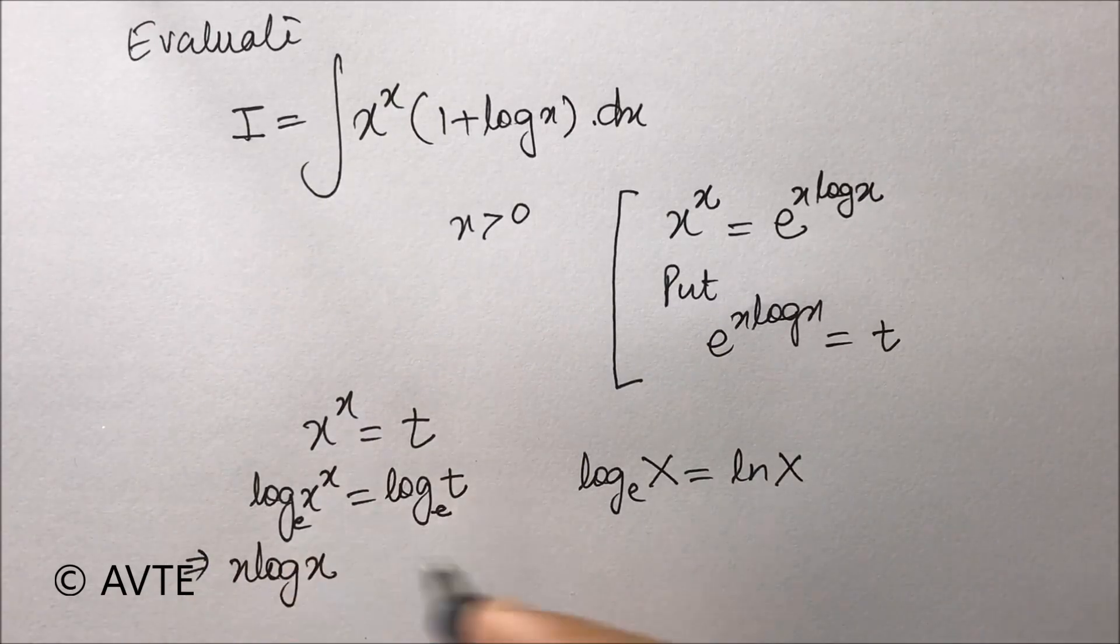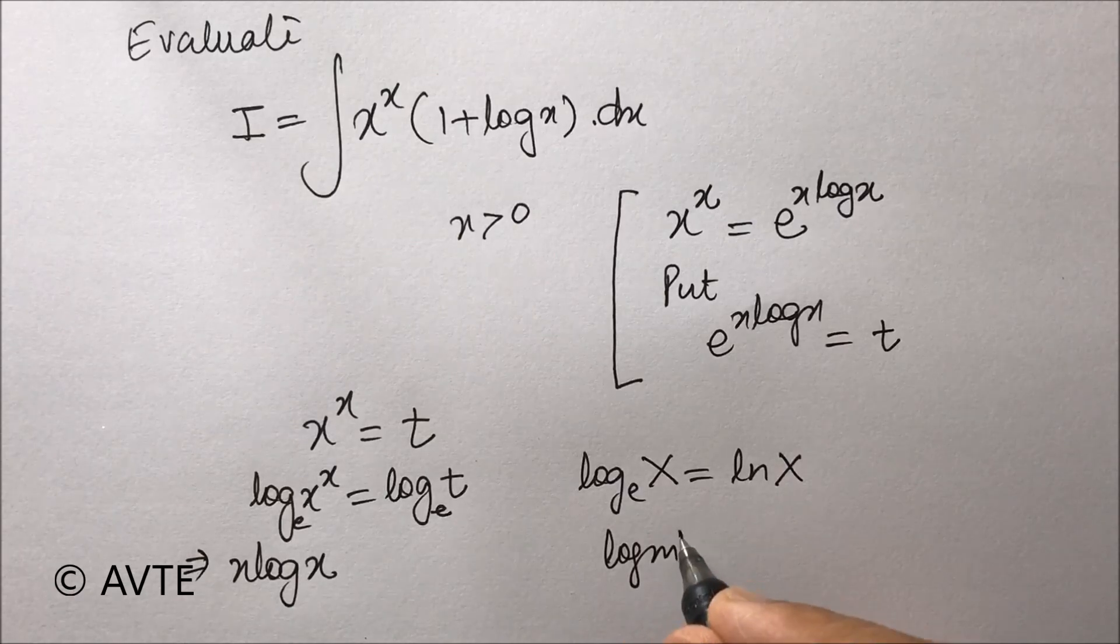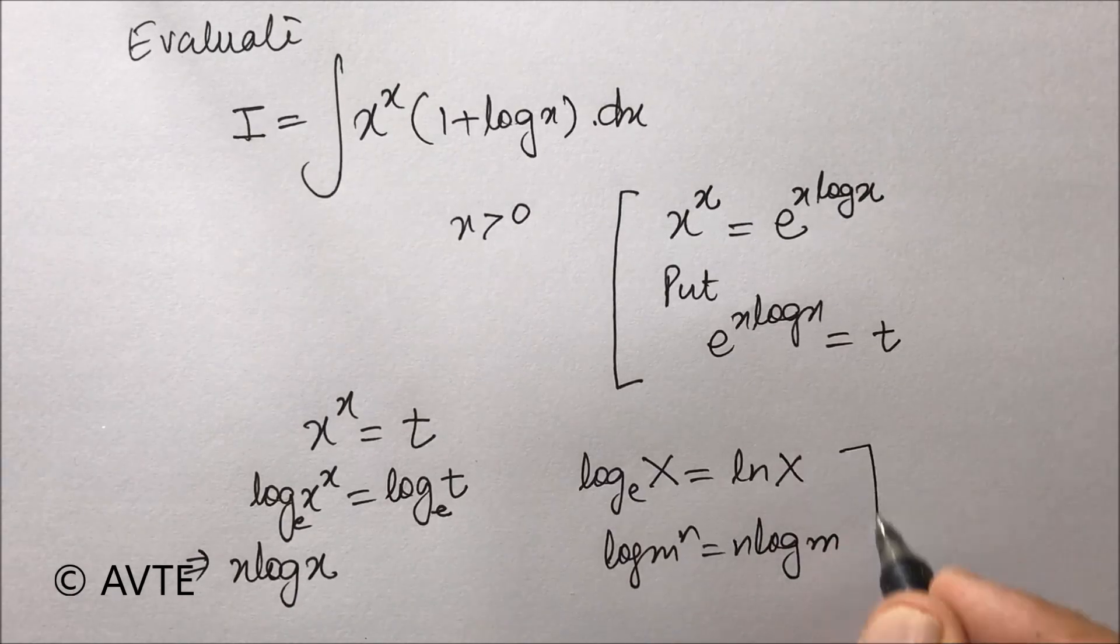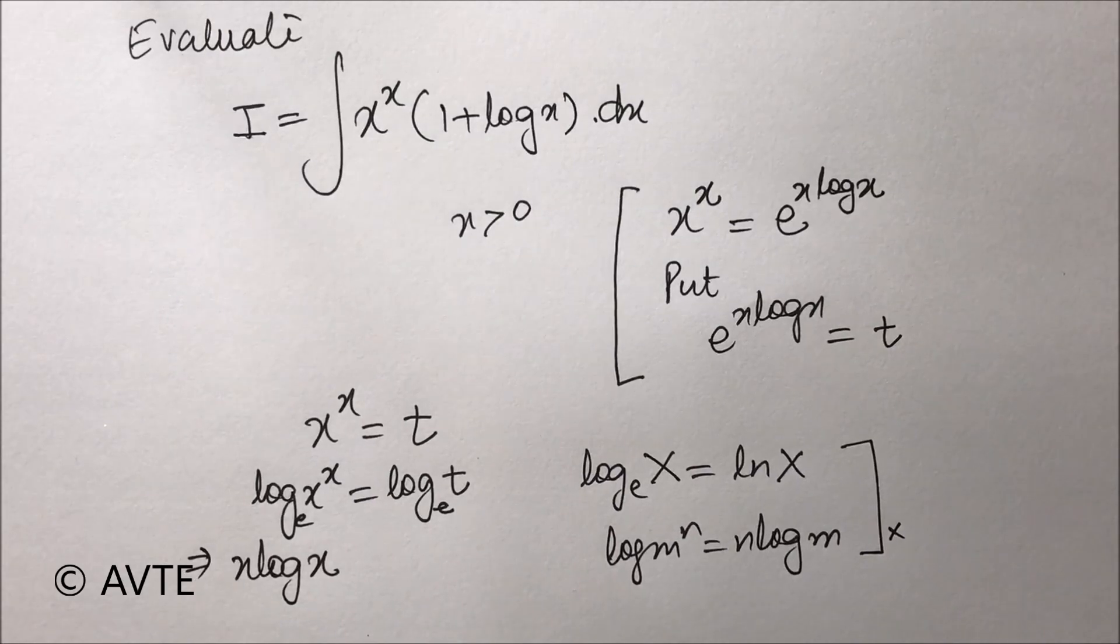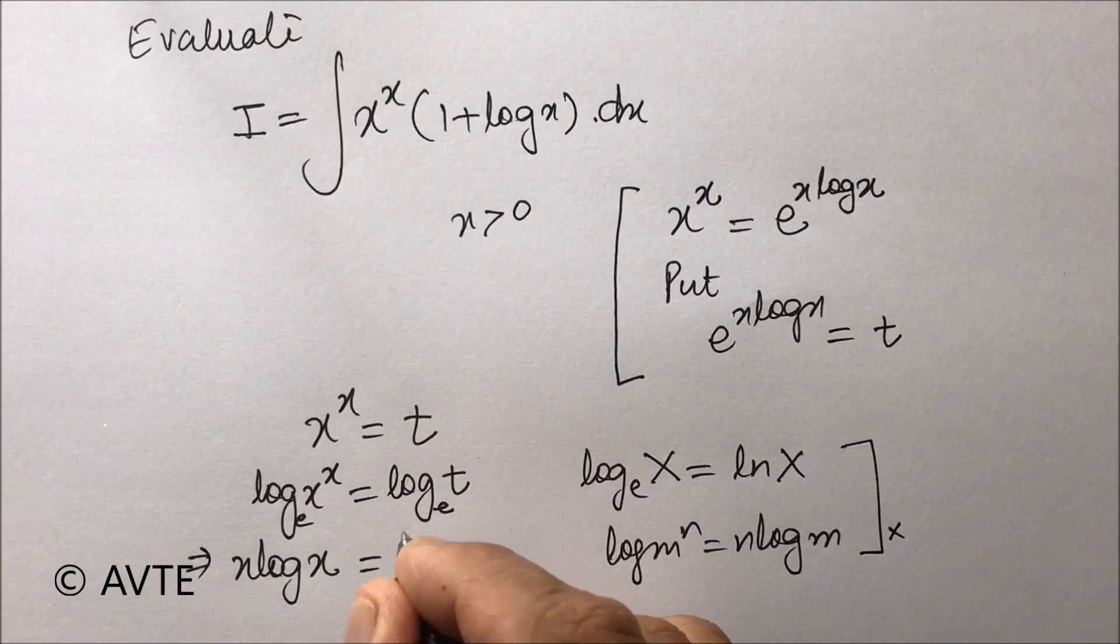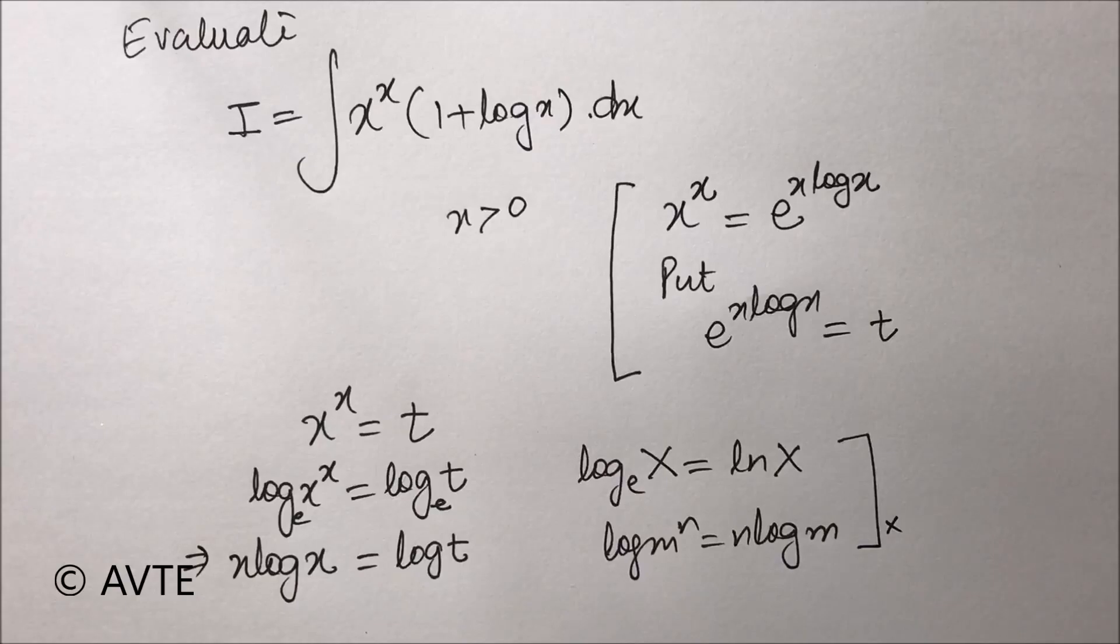Applying the property log(m^n) = n log(m), we get x log x on one side and log t on the other. We will now change the respect.